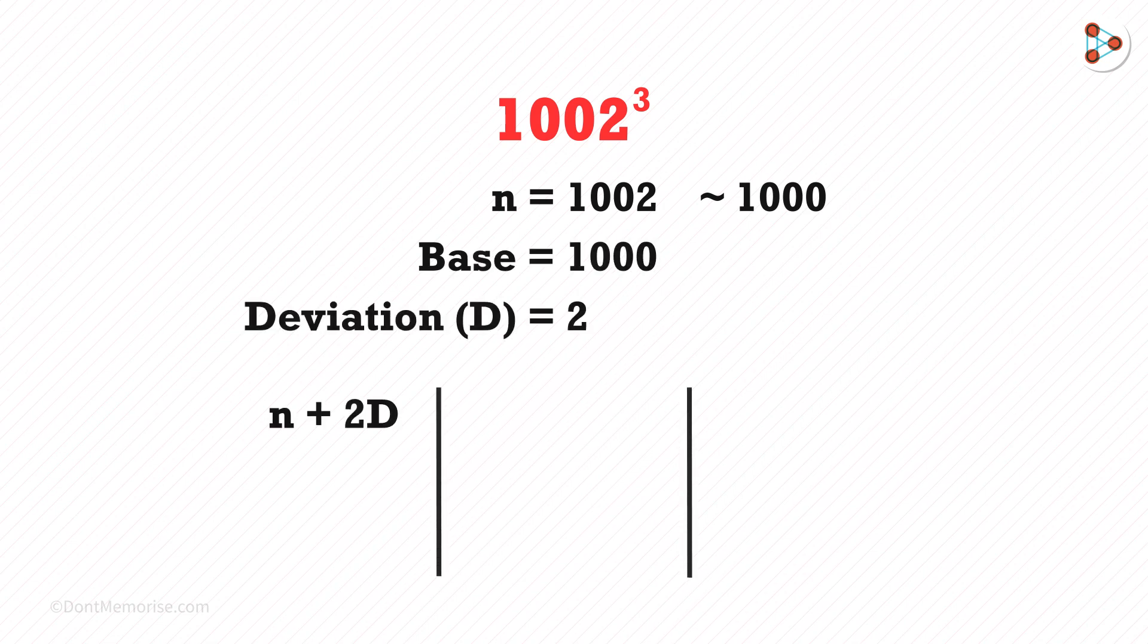These are our three parts: n plus 2d, 3 times d squared, and d cubed. n plus 2d is 1002 plus 2 multiplied by 2. Here it will be 3 times 2 squared, and on the right we'll have 2 cubed.